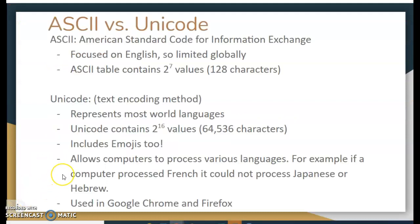Let's talk about the difference between ASCII and Unicode. We talked about ASCII last class period — it's the American Standard Code for basically exchanging information. The thing about the ASCII code is that it's focused on English, so it's limited globally. That means if your computer is encoded with the ASCII code, it might not be able to read something that is in French or Spanish or another language, which limits us to the number of characters we can actually have.